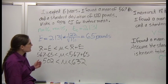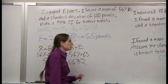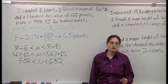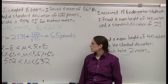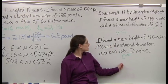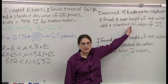So now we've seen how to find confidence intervals for a mean using two different methods, Z and T.